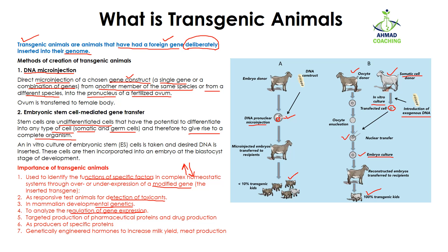Moreover, transgenic animals allow you to analyze the regulation of gene expression — how a gene is regulated, what factors are responsible for the expression of a particular gene, and why some genes are not expressing. Along with this, targeted production of pharmaceutical proteins and drugs is also possible using transgenic animals.